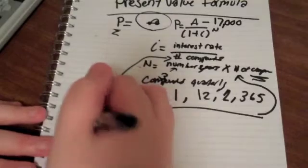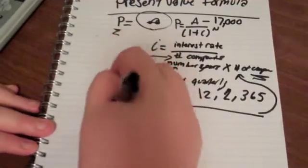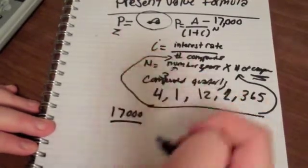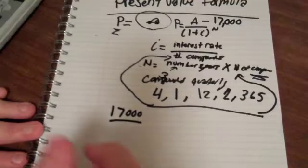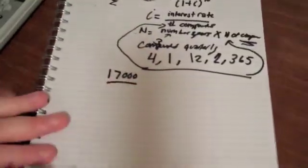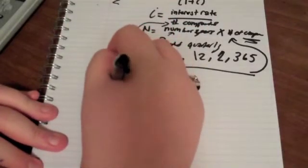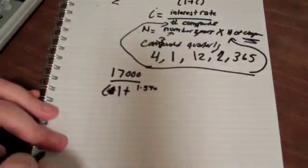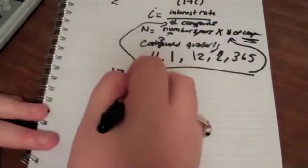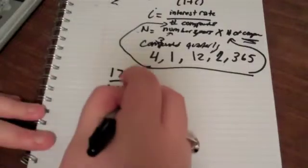So, how I would set up this formula to find out how much money that I need to invest right now to get my car in three years is it would go like this. $17,000 over, oh, I don't have an interest rate. Let me just pick one. I'll do 1.5. So, we'll have $17,000 for my car. And we'll do 1 plus 1.5%, which you would change to a decimal. So, you move the decimal place over 2, which would be 0.015.